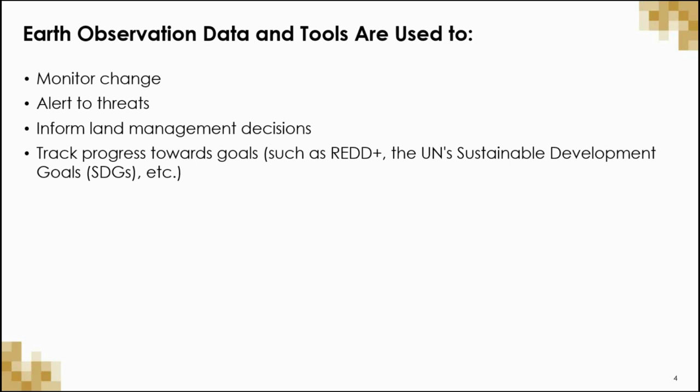Earth observation data and tools are also used to inform land management decisions, as these data provide a synoptic view of an entire landscape and can do so repeatedly. And finally, Earth Observations are used to track progress towards goals, including, for example, the monitoring and verification of activities associated with the UN's REDD initiative to reduce emissions from deforestation and forest degradation, plus the role of carbon enhancement, as well as supporting the implementation and monitoring of the UN's sustainable development goals.